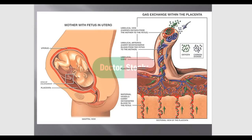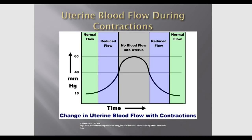During uterine contractions, the blood vessels to the placenta become constricted, so gas exchange happens primarily during the interval between contractions when the uterus is relaxed. During the interval, you have normal blood flow. But during the increment, peak, and decrement, you have reduced blood flow — with the peak having almost no blood flow. All three phases result in decreased blood flow to and from the fetus, making it important to assess how the baby is tolerating labor.